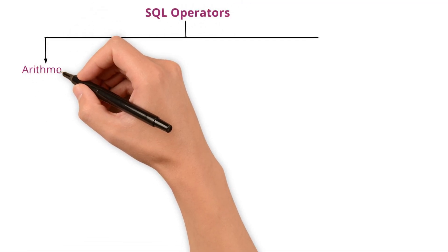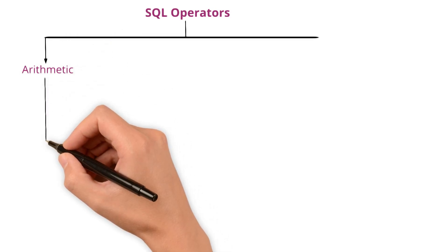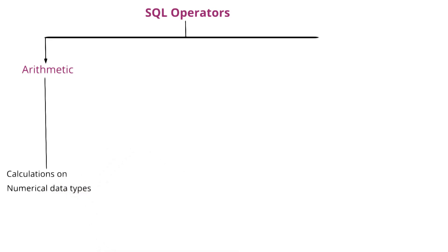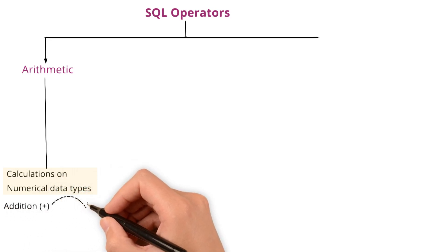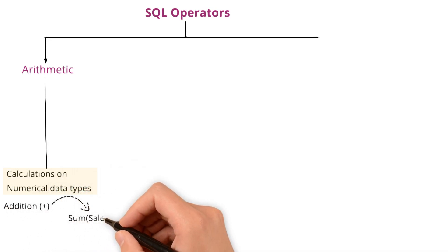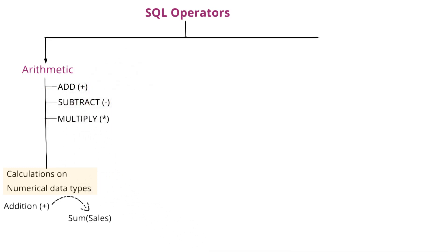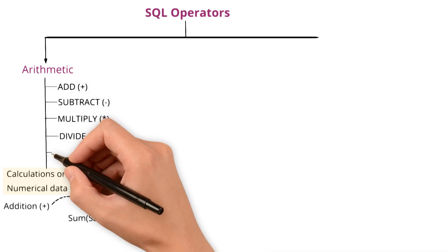Here's a breakdown of the common types of SQL operators. Arithmetic operators: These operators perform calculations on numerical data types, allowing you to crunch numbers within your queries. For instance, you can use addition operator to sum up the values in a sales column. The various arithmetic operators are add, subtract, multiply, divide, and modulo.